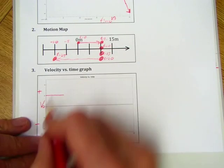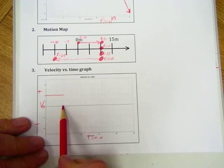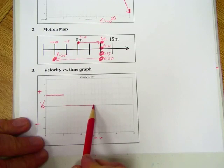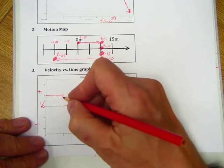Then it says she stood still, so 0 velocity. So from that point, she stood still for 15 seconds, 1, 2, 3, 5, 10, 15 seconds. We'll just kind of connect them there.